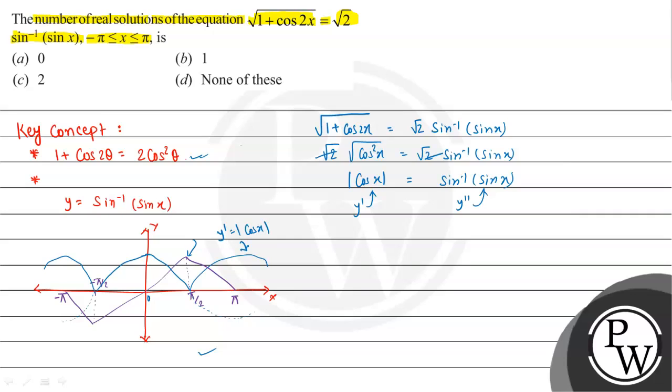These two points are at -π and π, giving us two intersection points. Hence, the number of real solutions between -π to π is two solutions.